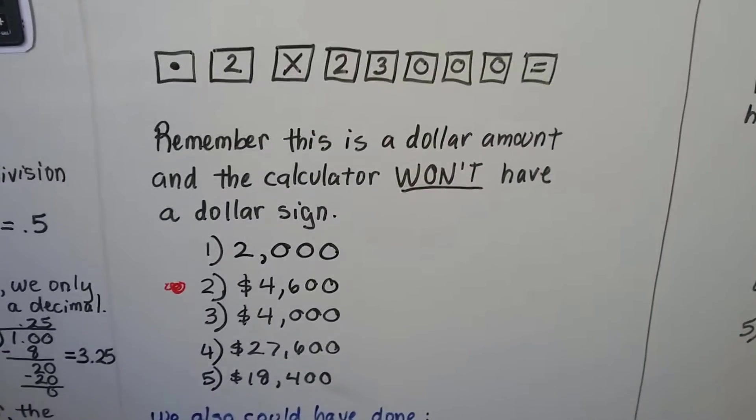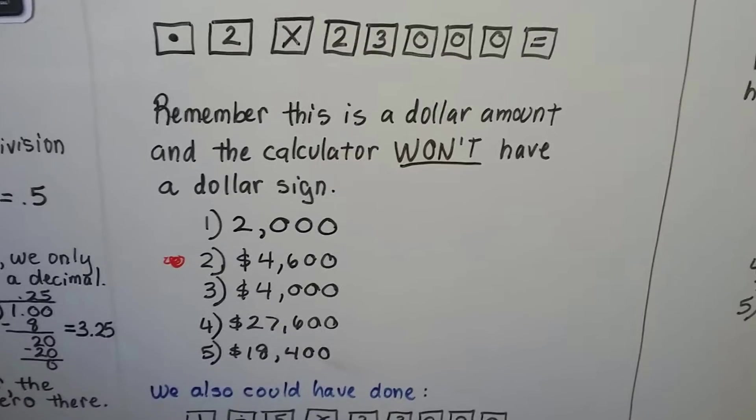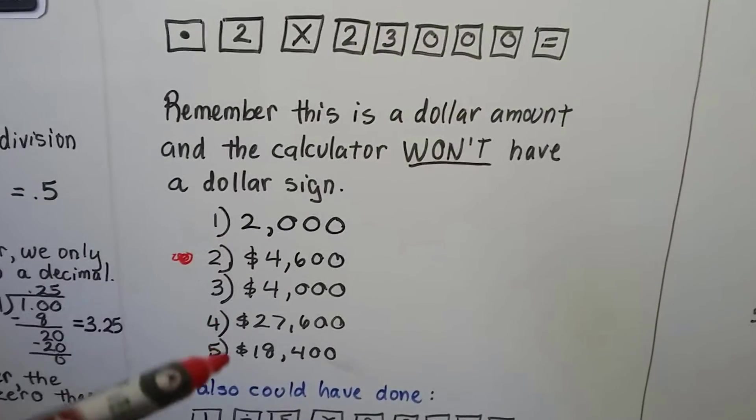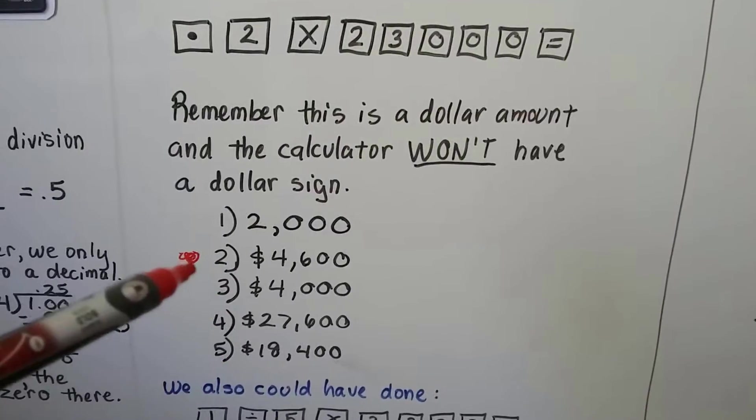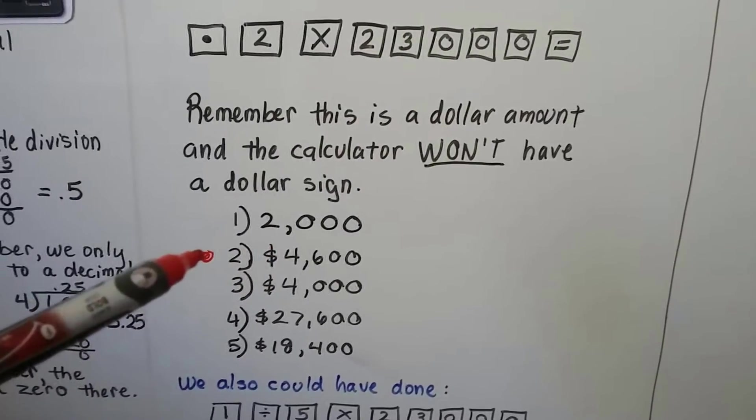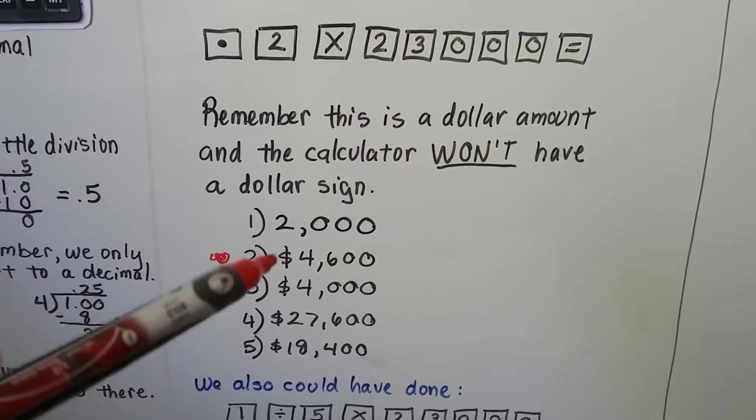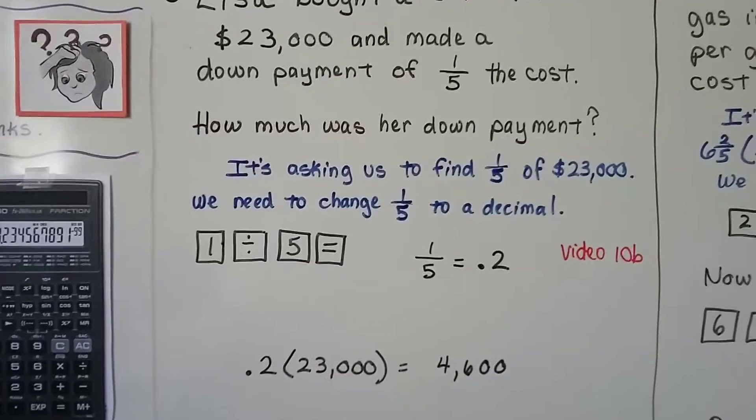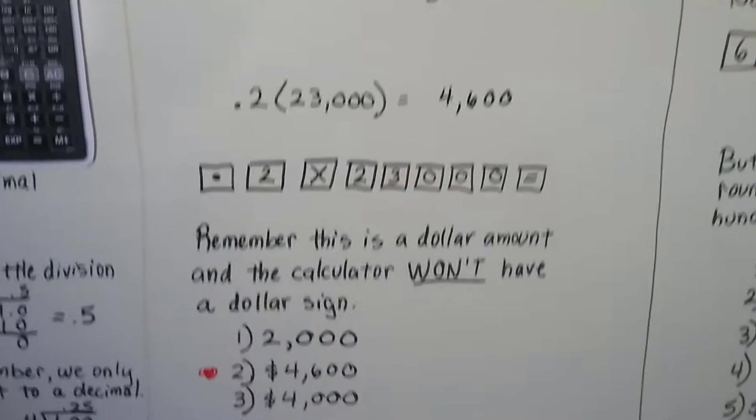Now, remember this is a dollar amount and the calculator won't have a dollar sign in the answer. So, make sure that your answer has a dollar amount. So, number 2 would be the correct answer. If you see it without the dollar sign, then it's the wrong answer because it's asking us for a dollar amount. Don't let it trick you.